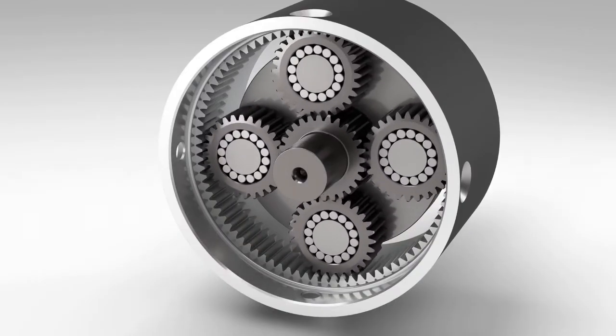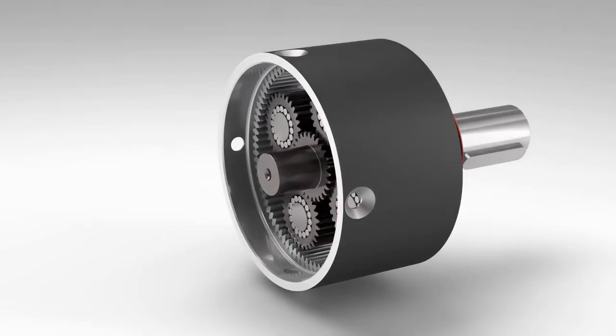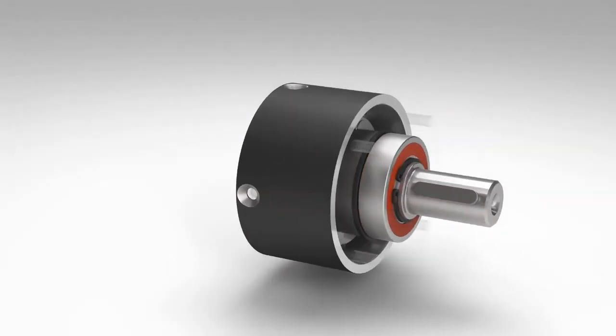A planetary gearbox consists of a central sun gear, surrounding planetary gears, an internal gear with inward-facing teeth, and a carrier.